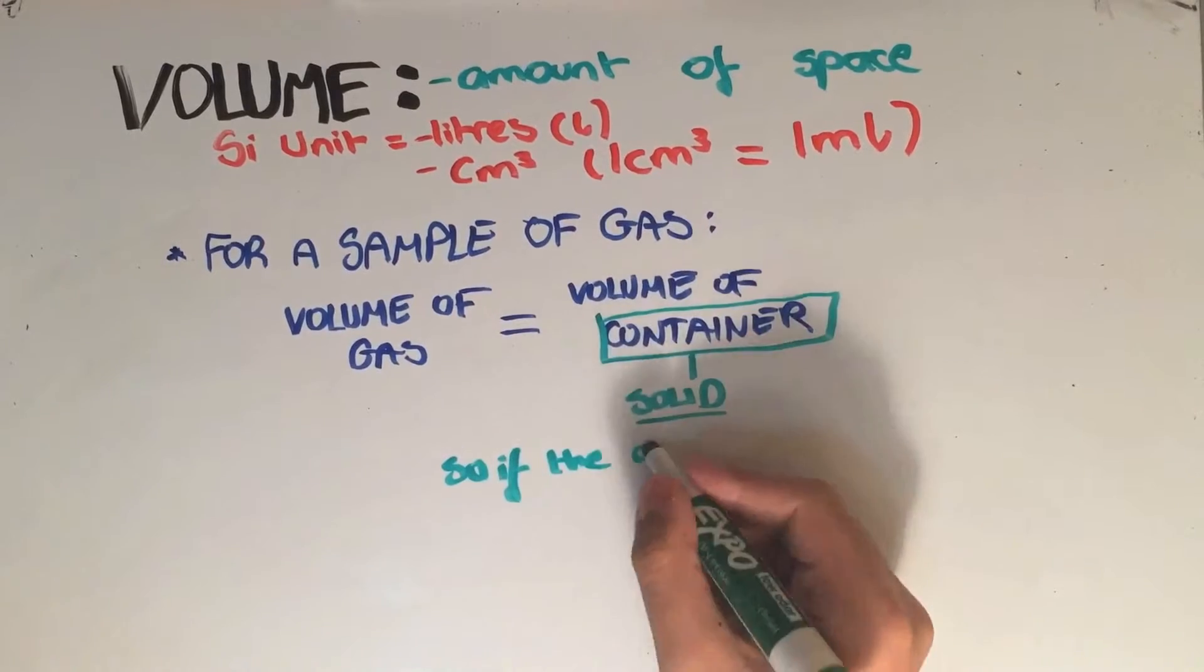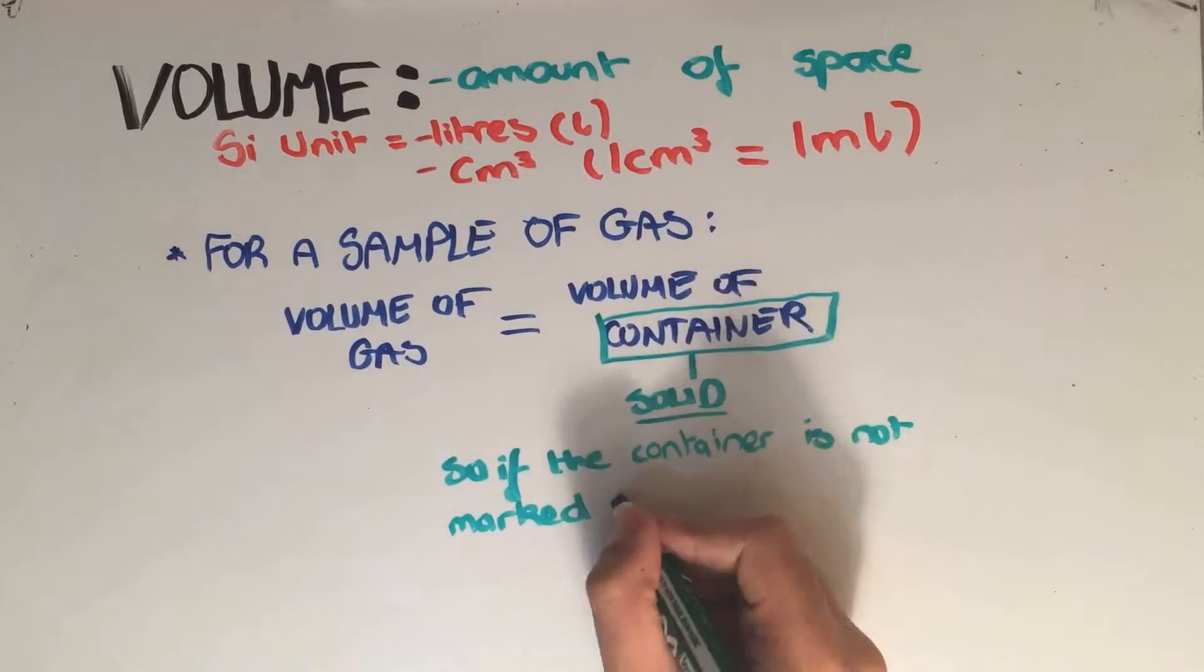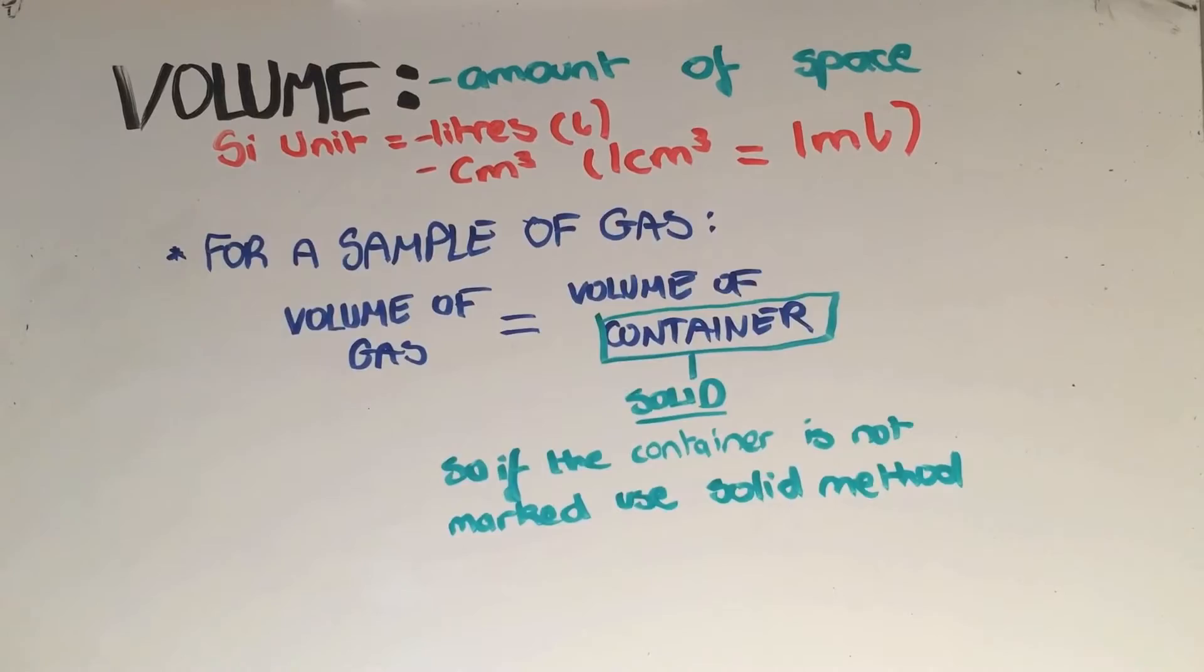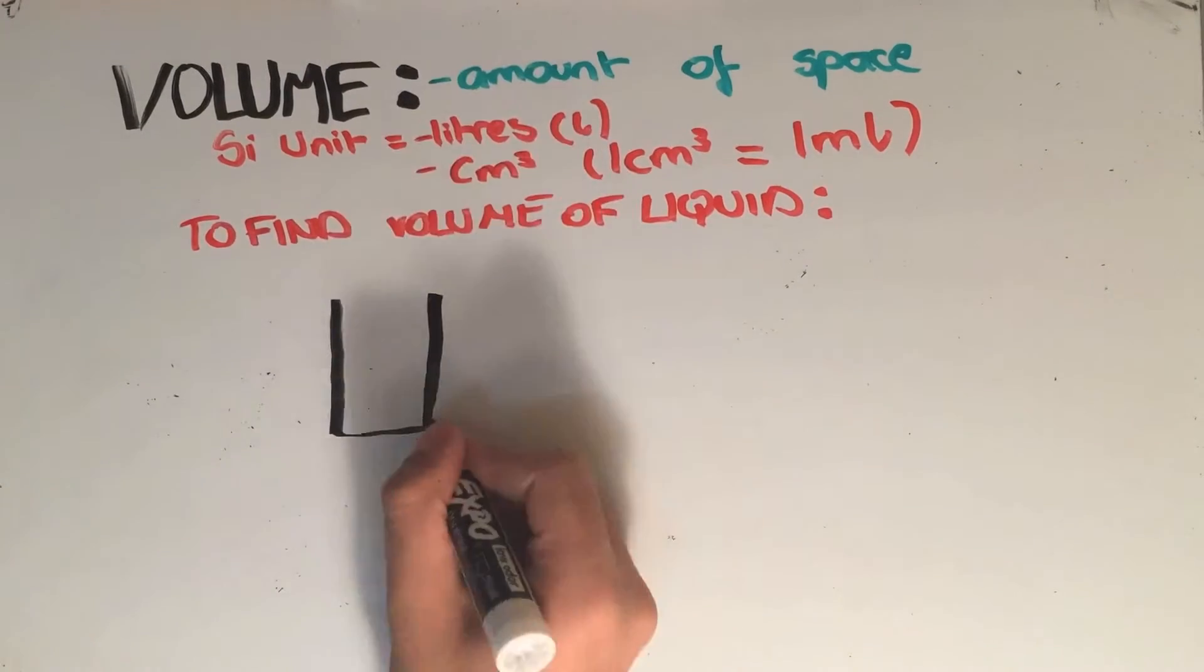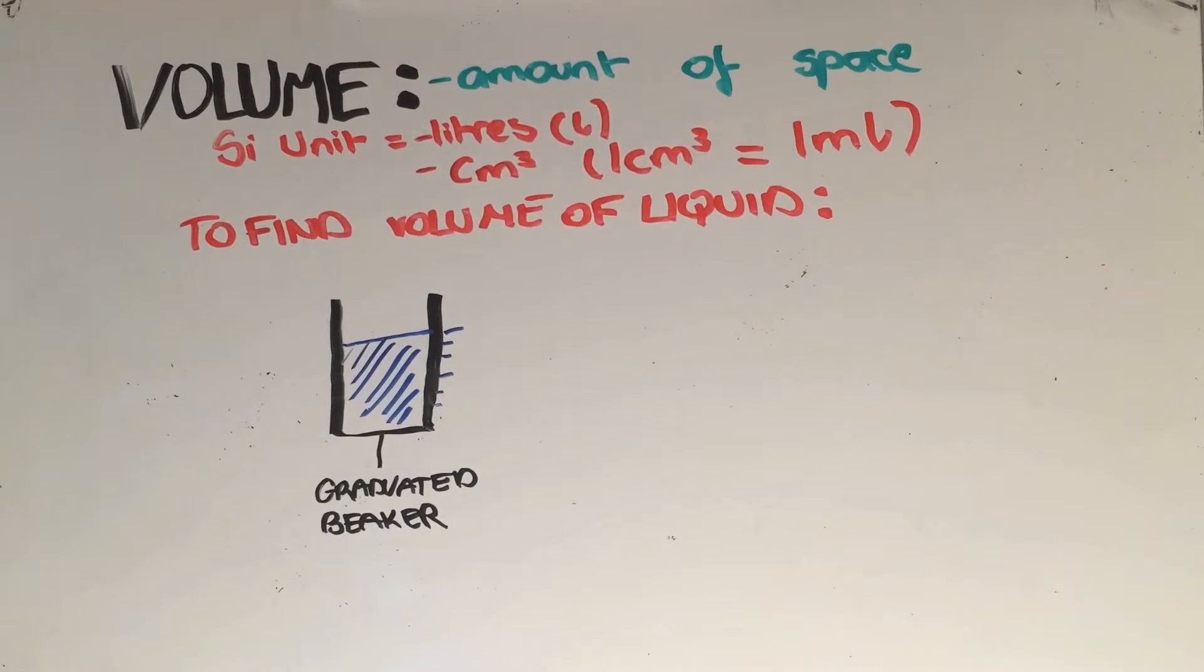So if the container doesn't indicate what the volume is, then find it out using the displacement method of solids. To find out the volume of a liquid, pour it into a graduated beaker and take a reading. So for example it might be 100 milliliters.